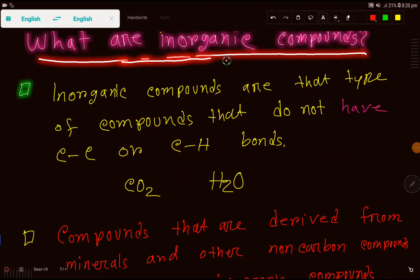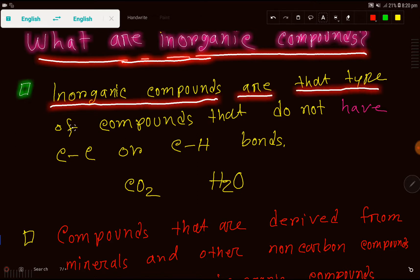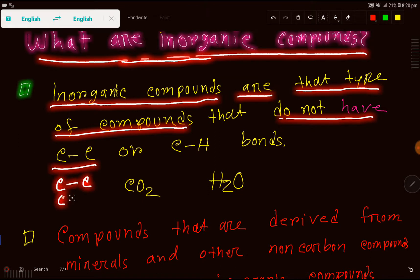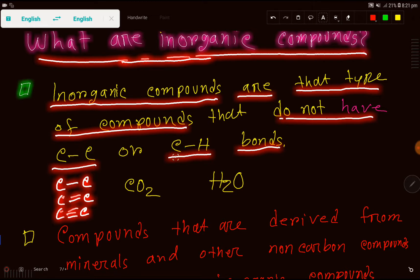What are inorganic compounds? Inorganic compounds are that type of compounds that don't have carbon-carbon bonds — single, double, or triple — or carbon-hydrogen bonds. On the contrary, organic compounds have carbon-carbon bonds or carbon-hydrogen bonds or both. So in inorganic chemistry, you will not get carbon-carbon bonds or carbon-hydrogen bonds.